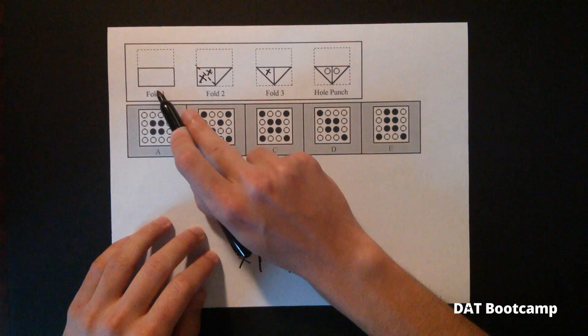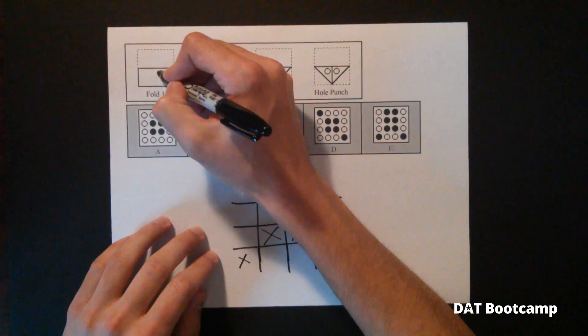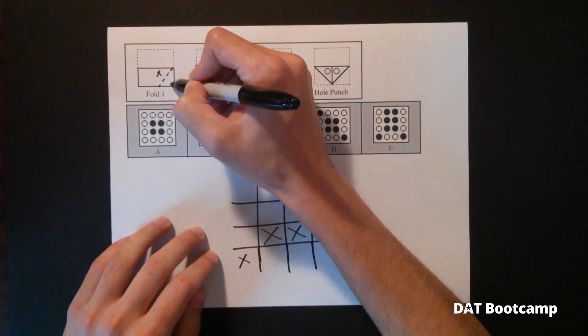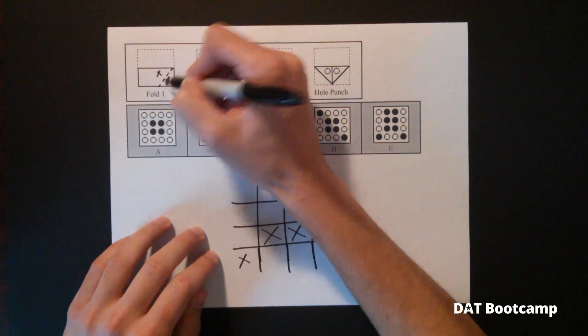Now between fold two and fold one, the same thing happens. There was a fold here. And it was unfolded. So there's a hole going to appear right here.